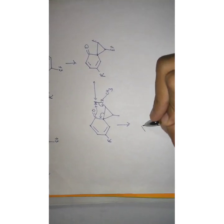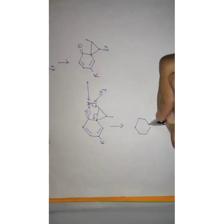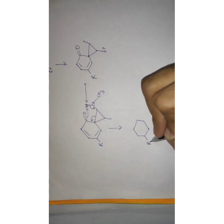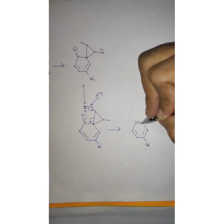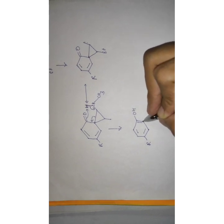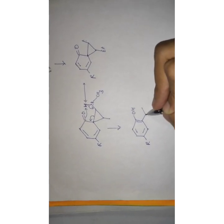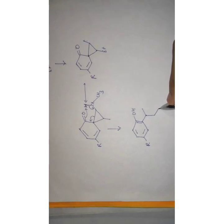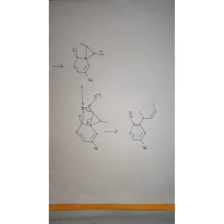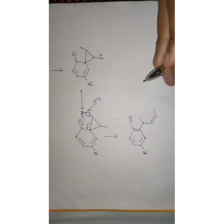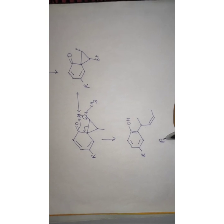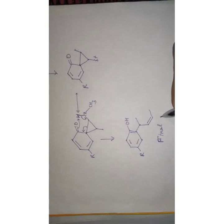Now we form the most stable product. The H migrates here, and finally the major product is obtained. Now look at the full mechanism.